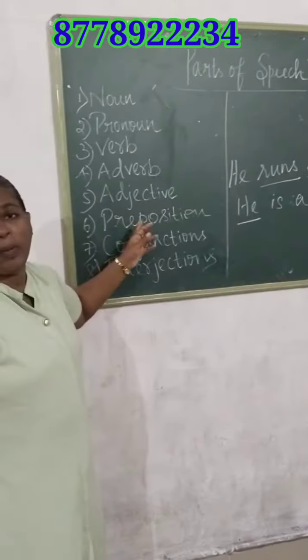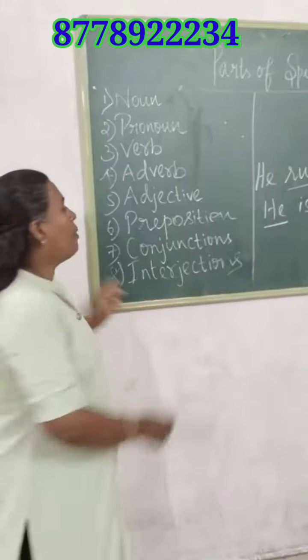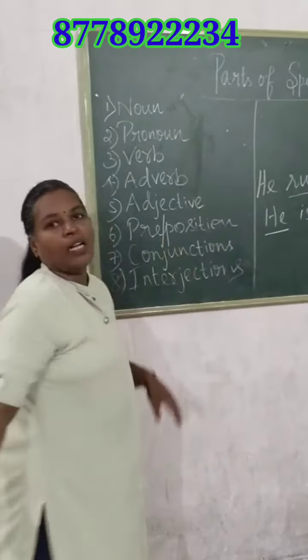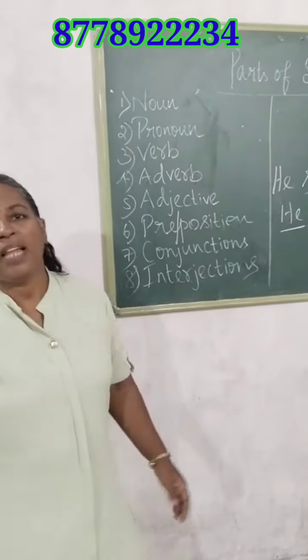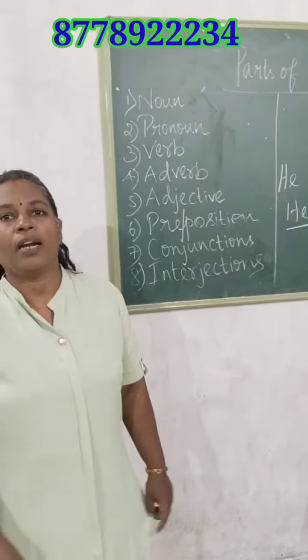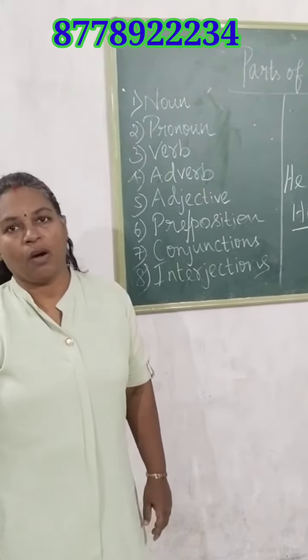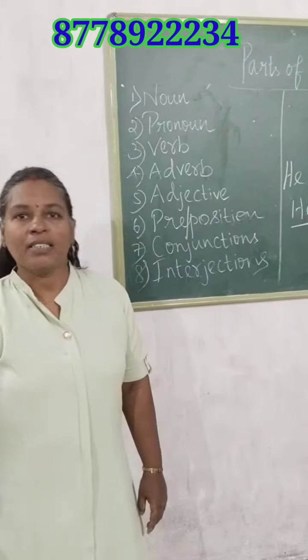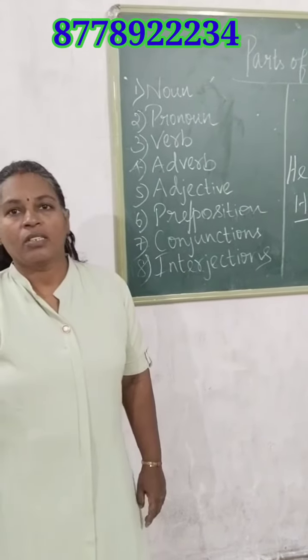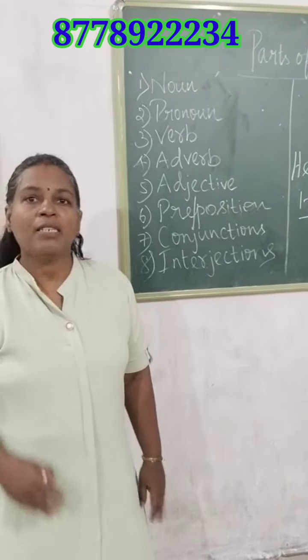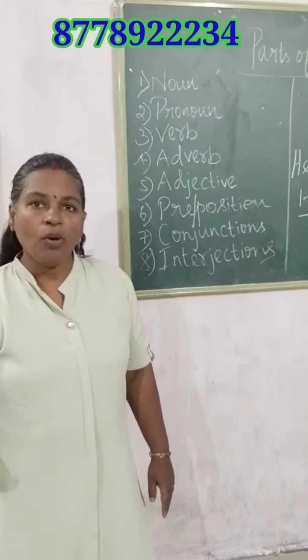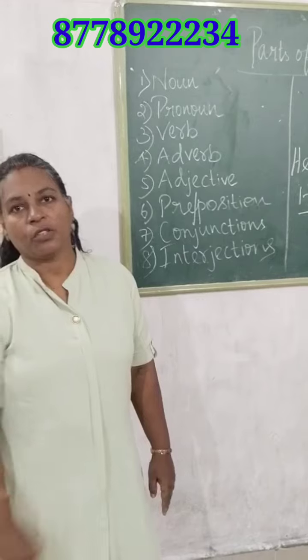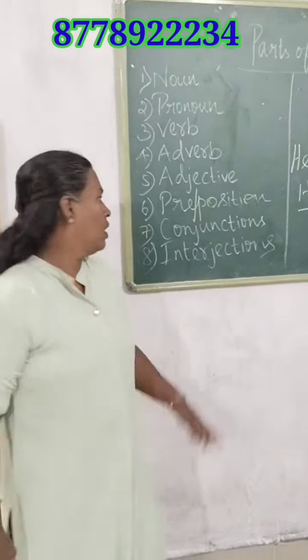Then we'll go to preposition. Preposition is nothing but a word placed before a noun or a pronoun. For example, the cat is lying under the table. So it is placed before a noun or a pronoun. That is called preposition.